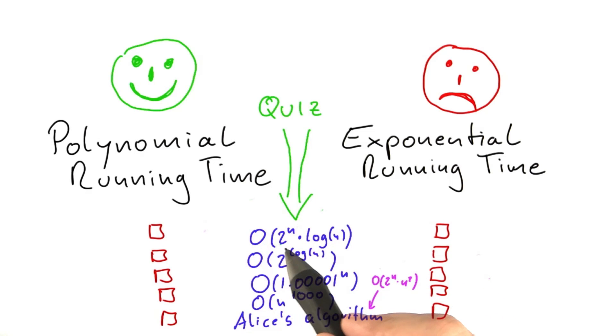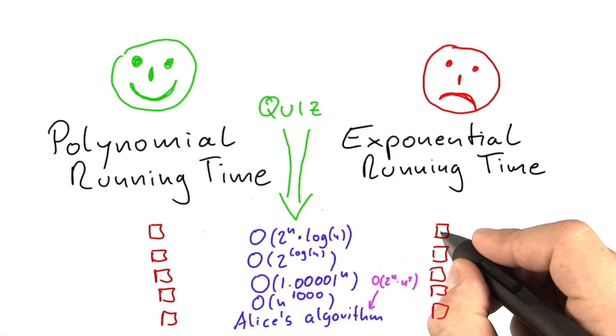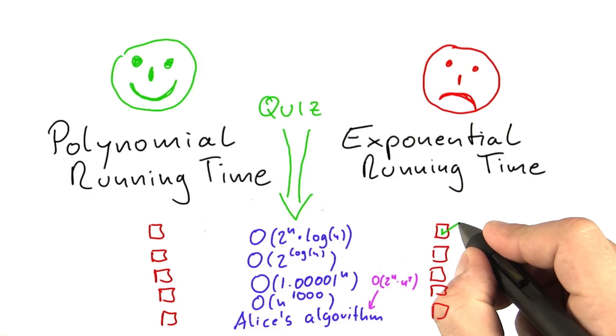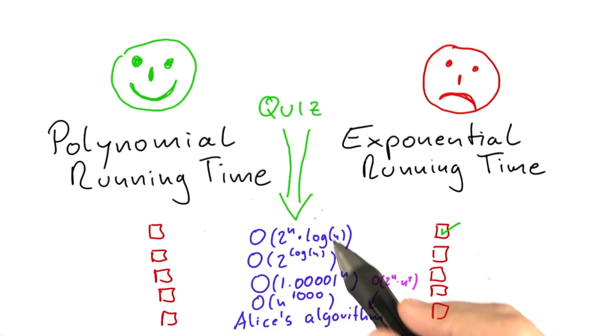So here's the correct answers. The first one, 2 to the power of n times the logarithm of n — that is clearly an exponential running time because 2 to the power of n is exponential.